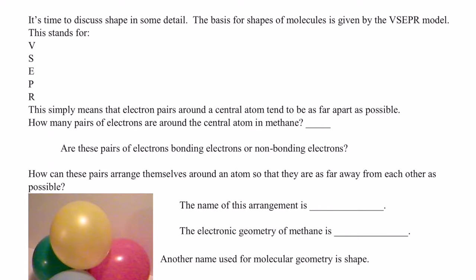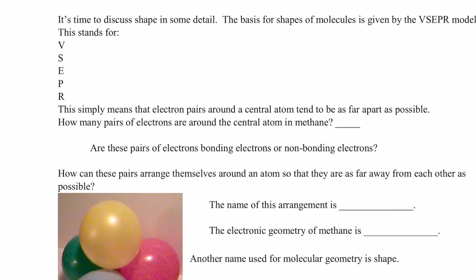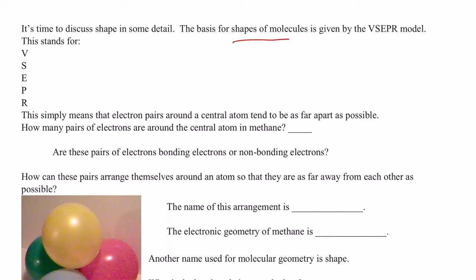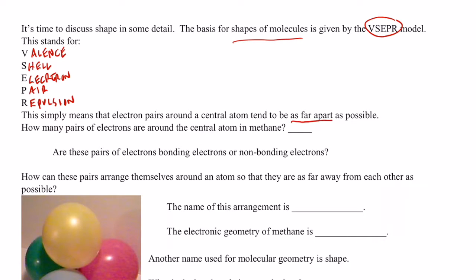Alright folks, we're going to talk about shape and detail now. I know I've left you in a little suspense from the last video. The basis for shapes of molecules is given by the VSEPR model — V-S-E-P-R — which stands for valence shell electron pair repulsion. It basically means that electron pairs around the central atom tend to be as far away from each other as possible. We're talking about valence pairs.